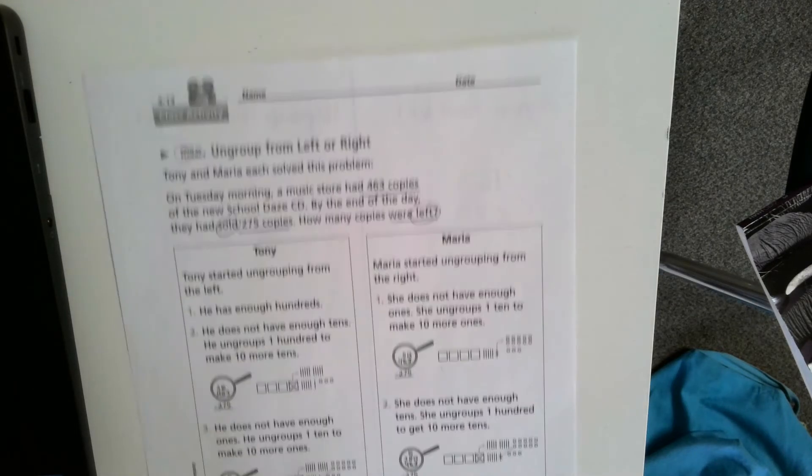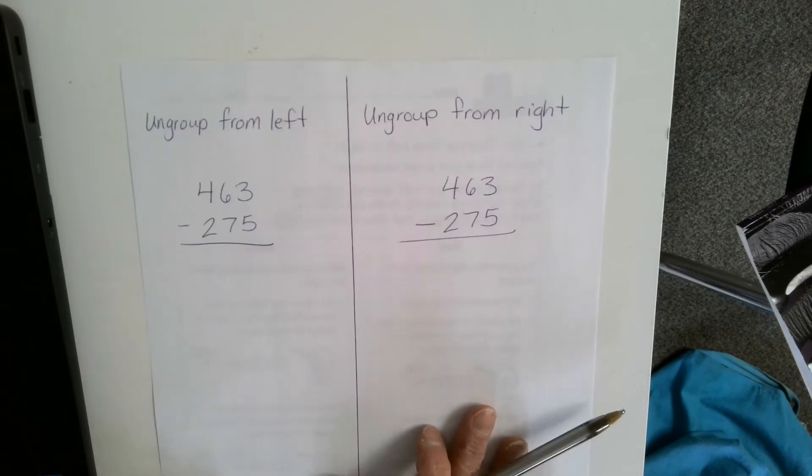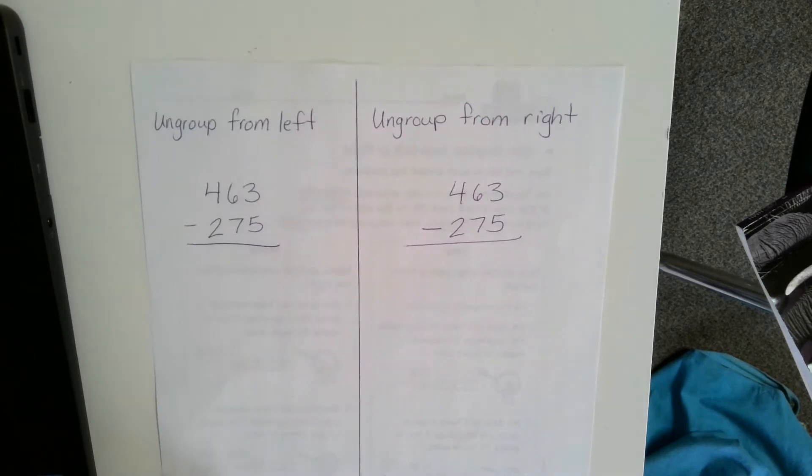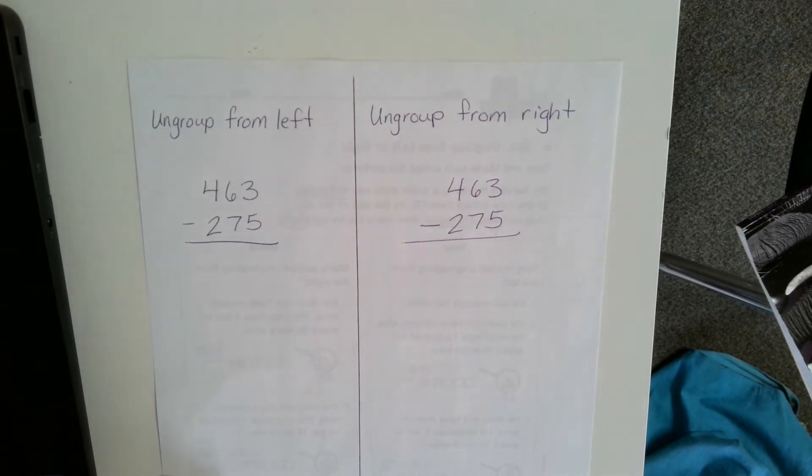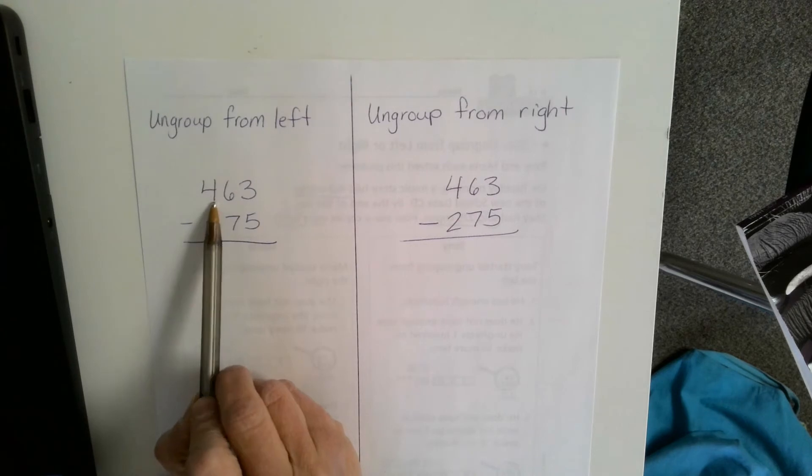I'm going to show you two ways: ungrouping from the left and ungrouping from the right. Ungrouping from the left is a little different than what we've done in the past. Usually we start in the ones place, but because we're ungrouping from the left, we're going to start in the hundreds.